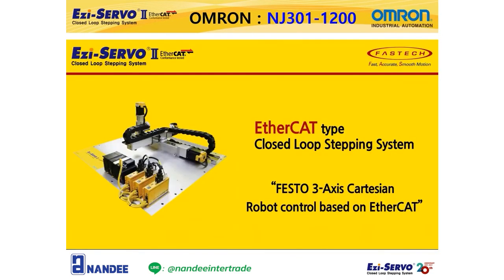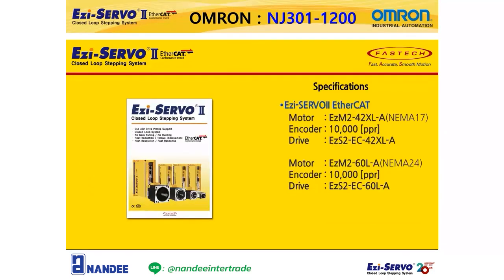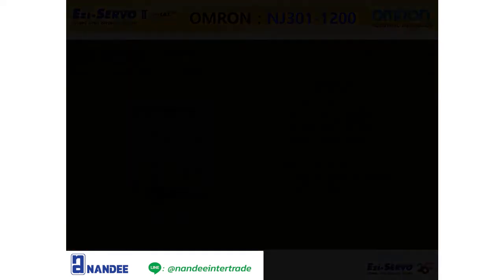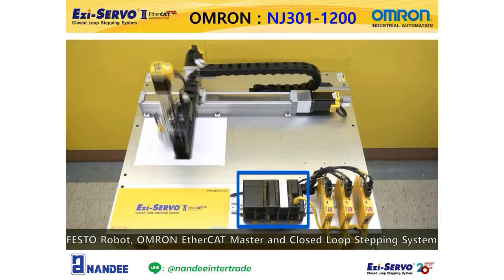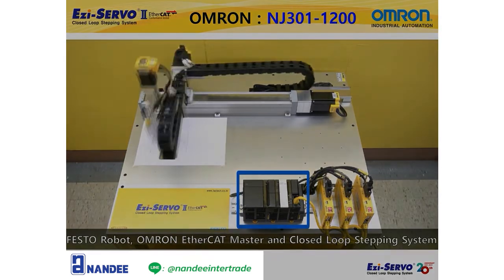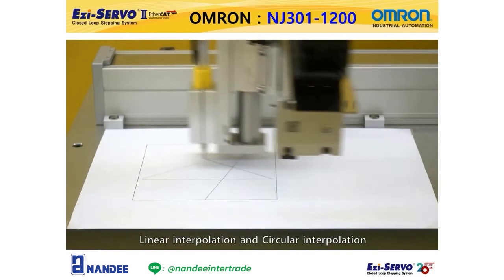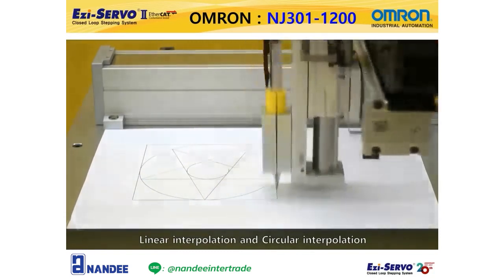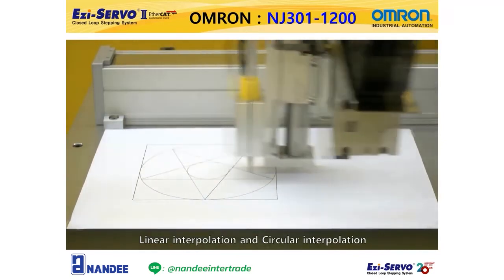The following is a demonstration using the EtherCAT master of Omron in Japan, the 3-axis Cartesian robot of Festo in Germany, and three axes of EZ Servo 2 EtherCAT. Circular interpolation and linear interpolation can also be easily implemented with EtherCAT masters and EZ Servo 2 EtherCAT.